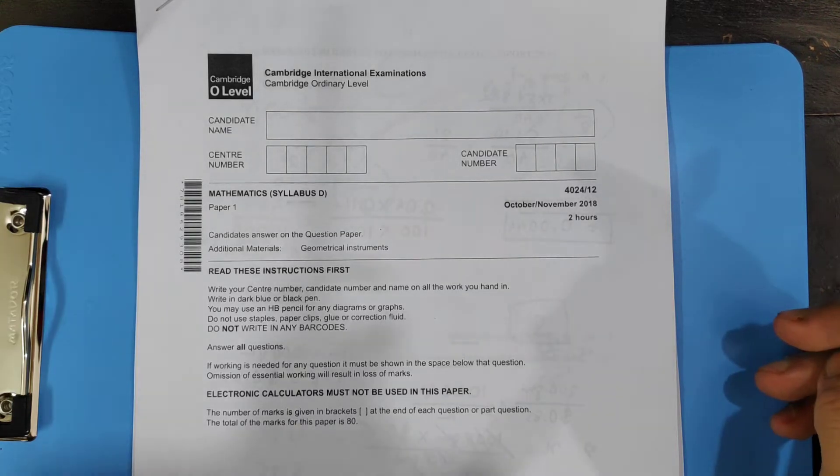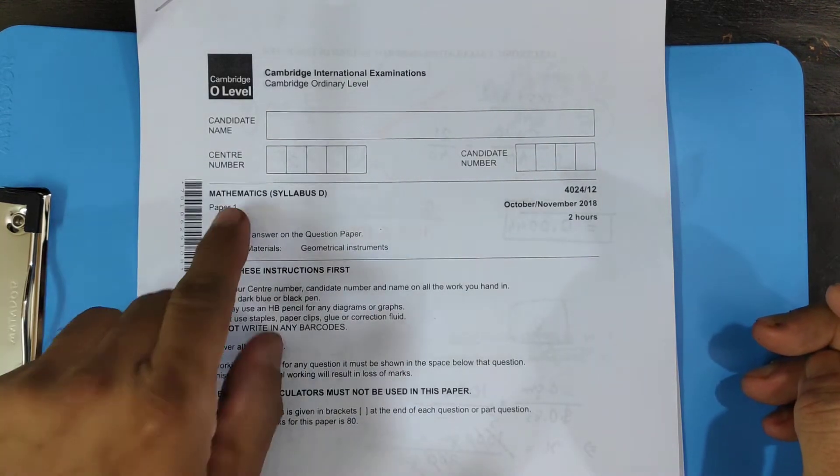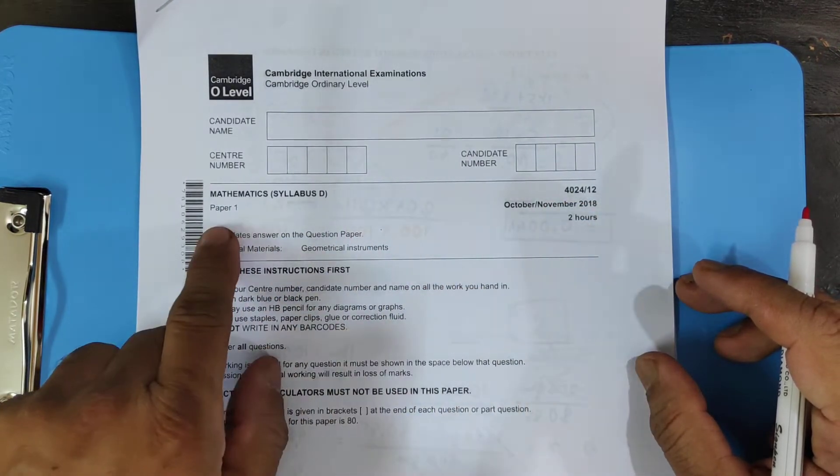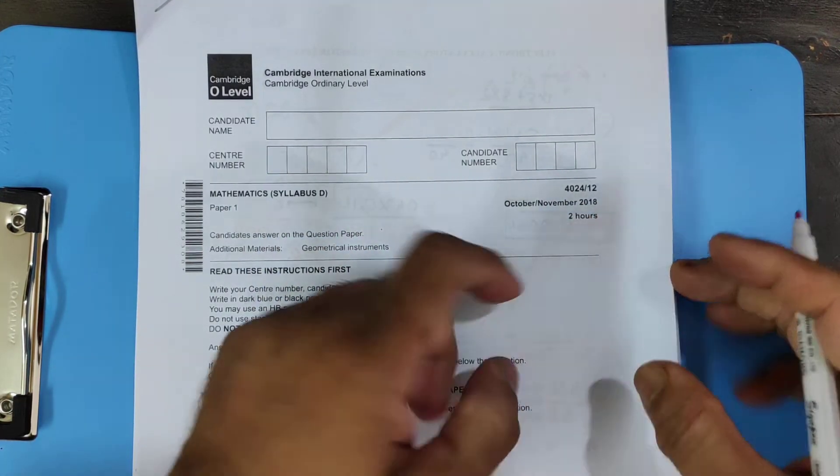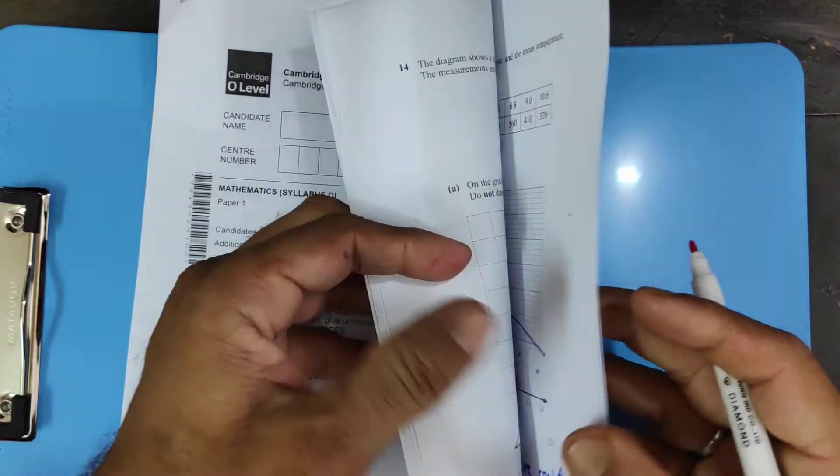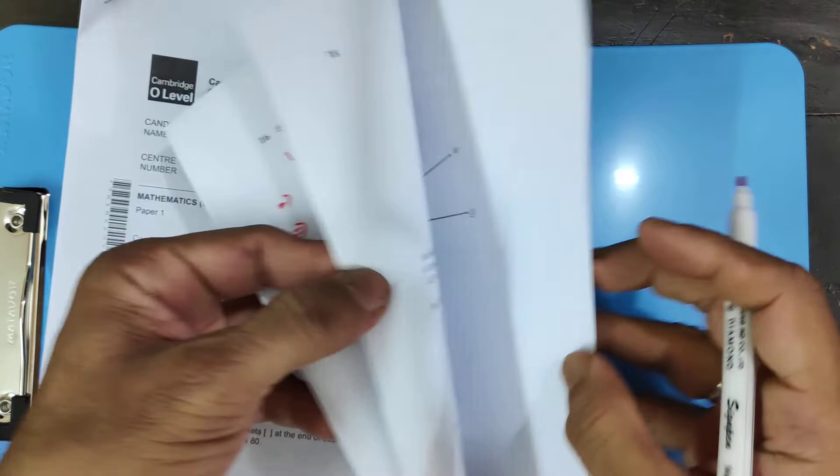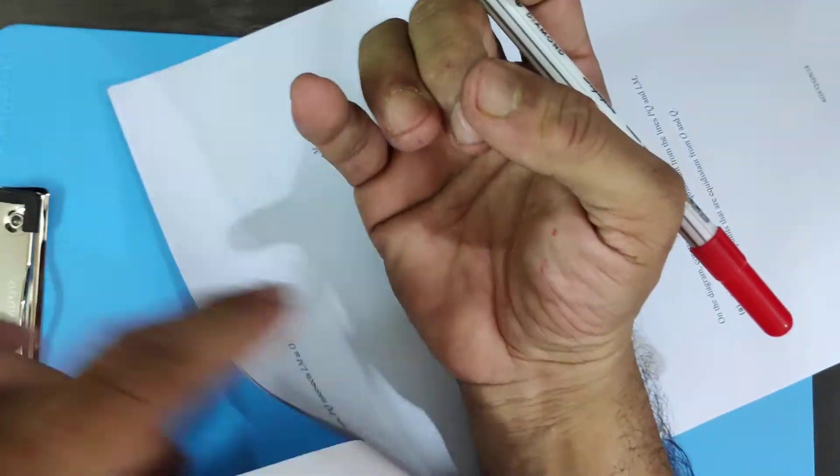Good morning students. Welcome to my last video of solving mathematics syllabus D 4024 variation 12 paper 1 October November 2018. In my last two videos I have finished up to question number 17. Today I'm going to do from question number 18.